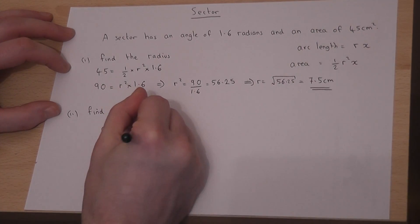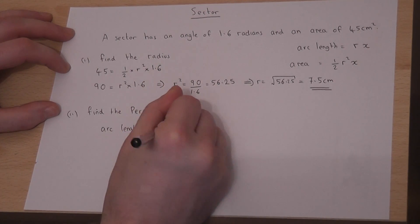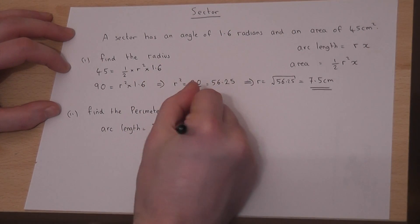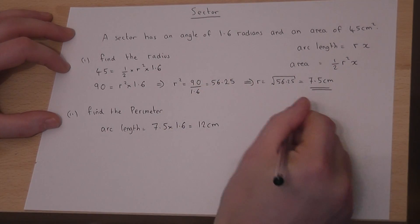The arc length will be the radius, 7.5, times the angle, 1.6, which works out to 12 centimeters. That's the arc length of the sector.